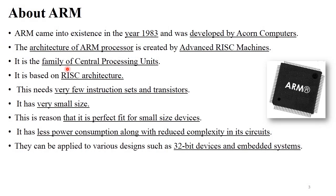The first point is about ARM processor. ARM processor is a family of central processing units, that is CPUs. We have heard about different processors like Intel and Pentium — ARM is also one kind of processor. ARM processor was developed by Acorn Computers in 1983, and ARM stands for Advanced RISC Machine. This ARM architecture was developed by Advanced RISC Machine, and that's why ARM is based on RISC architecture, that is Reduced Instruction Set Computer architecture. We already discussed RISC vs CISC architecture in the last session.